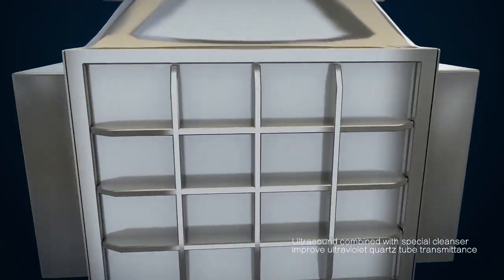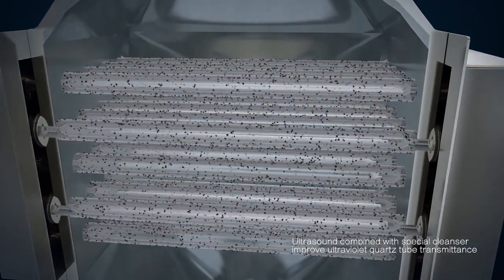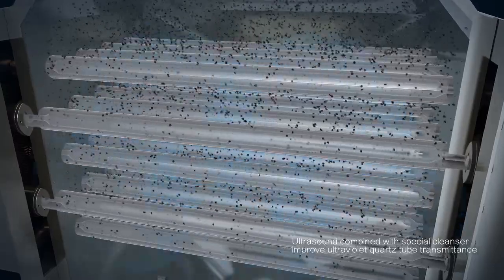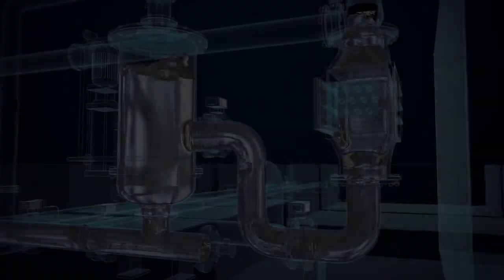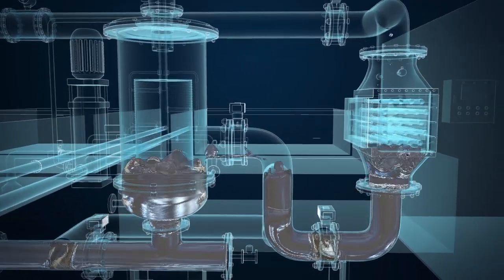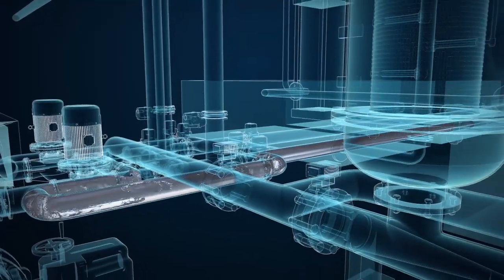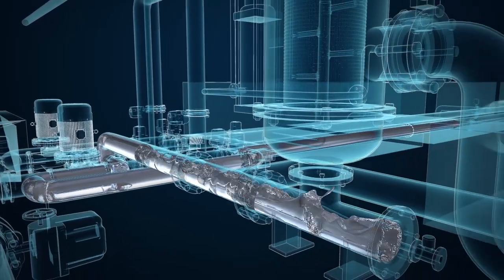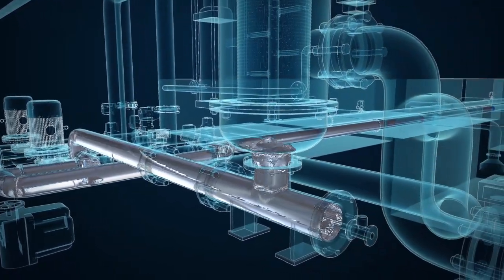Before system starts and after system stops, run ultrasonic device to clean the quartz tubes. After system stops running, seawater in filter and EPT chamber is discharged and then filled with fresh water to prevent biological breeding and reproduction in the pipes.